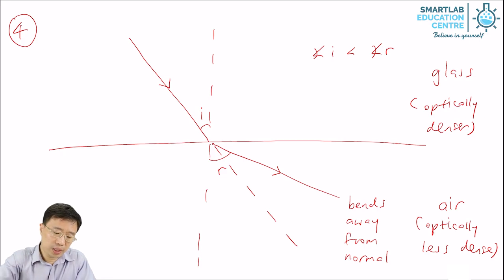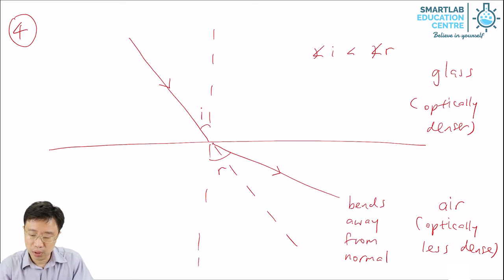So the previous case, you have light travelling from air to water, optically less dense to denser. It bends towards the normal. When you have light travelling from optically denser to optically less dense, it bends away from the normal.